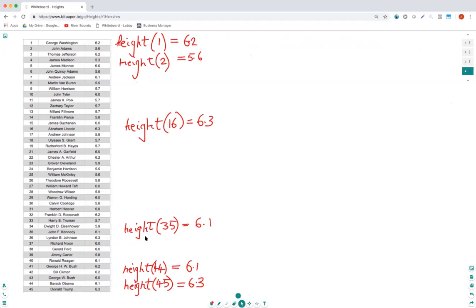Height of 35 would mean height of the 35th president John F Kennedy would be 6.1. And then I will leave it with you to guess what these two heights mean, what these two expressions mean. Who is 6.1 feet tall here according to this notation and what is the height of the 45th president? It should be easy for you to guess now.